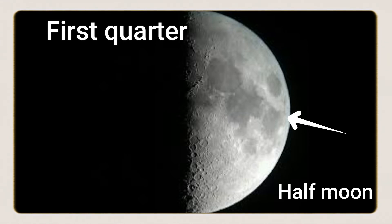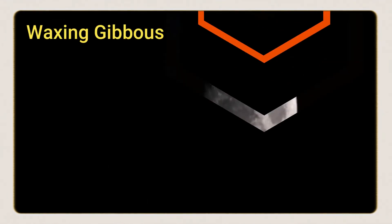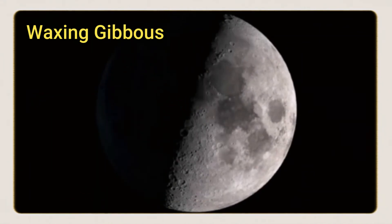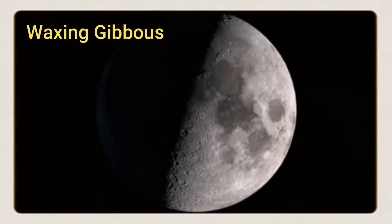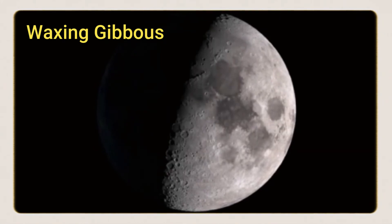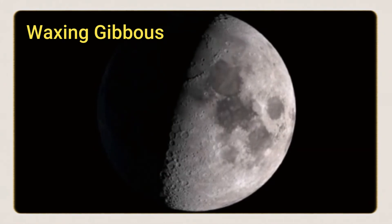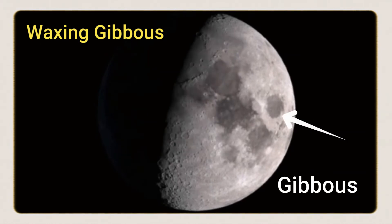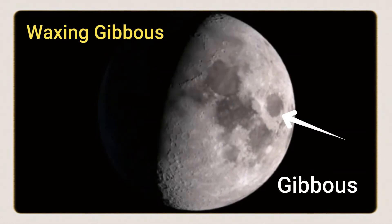The next phase is waxing gibbous, when we see more than half of the moon. It is called gibbous. Gibbous means oval to round shape.